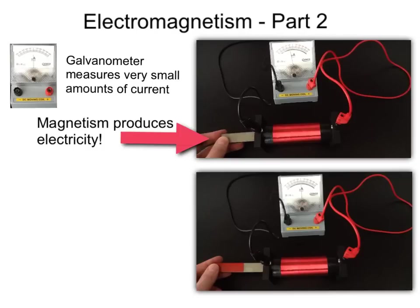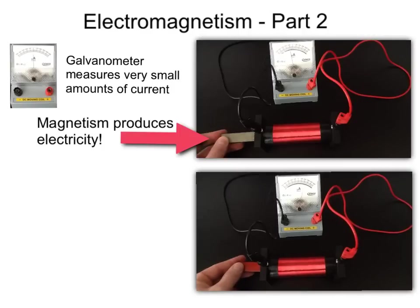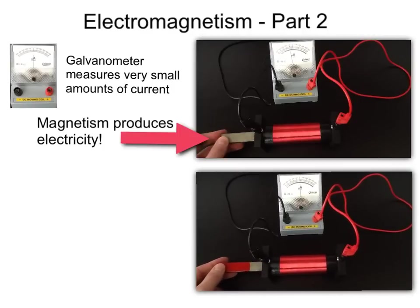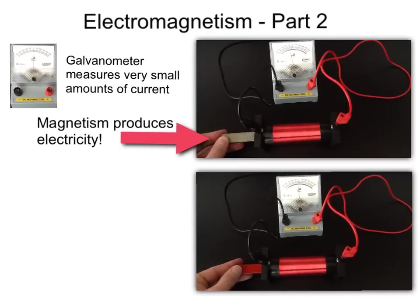In the early 1800s, this was a phenomenal discovery, that magnetism produces electricity. Let's make another observation of our magnet going into the solenoid, now with the south end in first. Here you can see that the current changes direction, but in the opposite way.